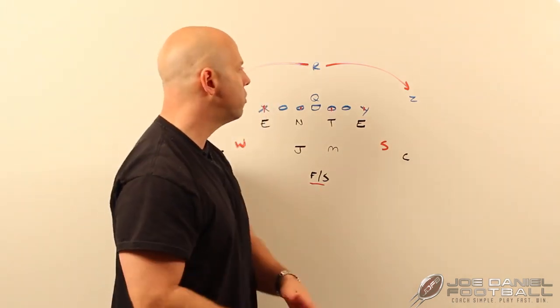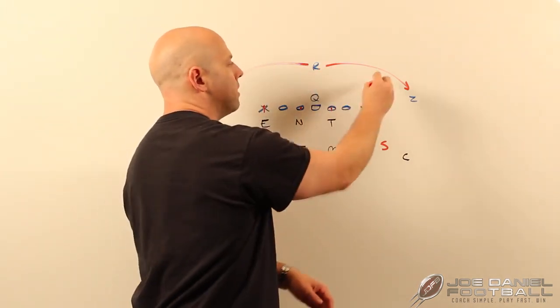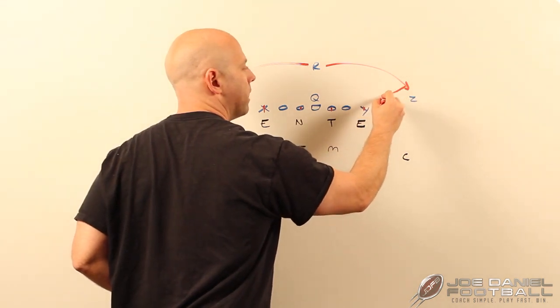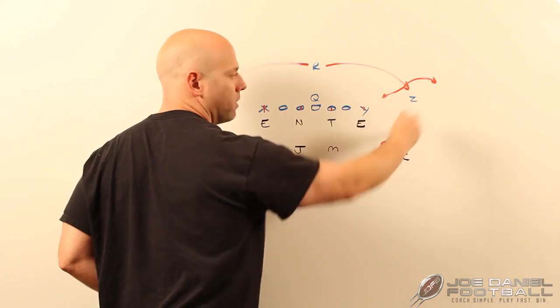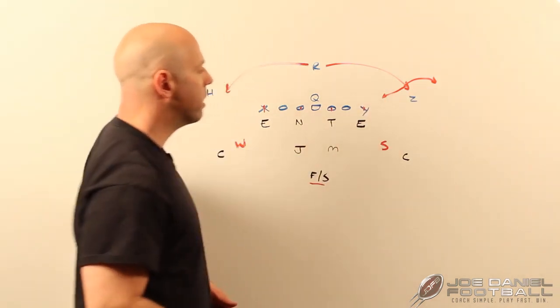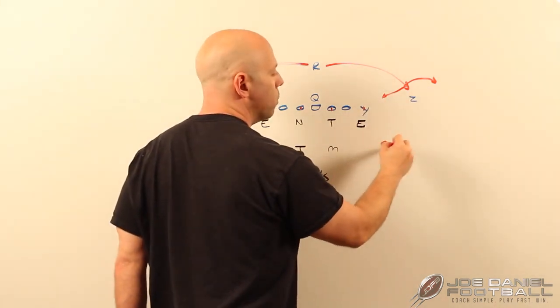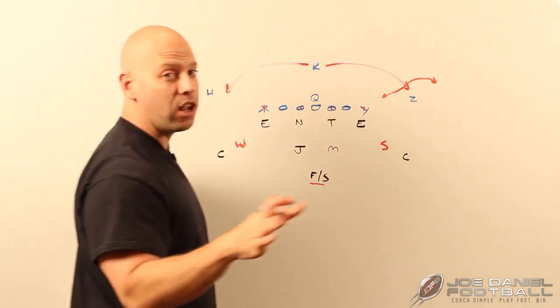Force player is the guy that has to force a change of direction. When this guy tries to run outside, he's got to force him either to cut back to the inside or to bubble to the outside where now my pursuit and that really fast free safety and the linebackers can get over top.